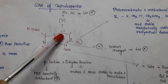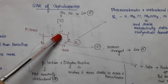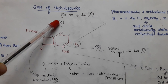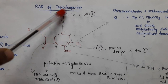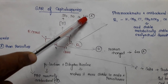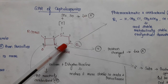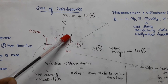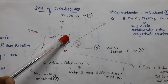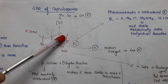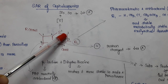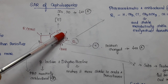In the first portion we have sulfur. If the sulfur is oxidized to sulfone or sulfoxide, antibacterial activity would be reduced. In the second portion, there should not be any substitution — if there is any substitution, activity would be reduced.